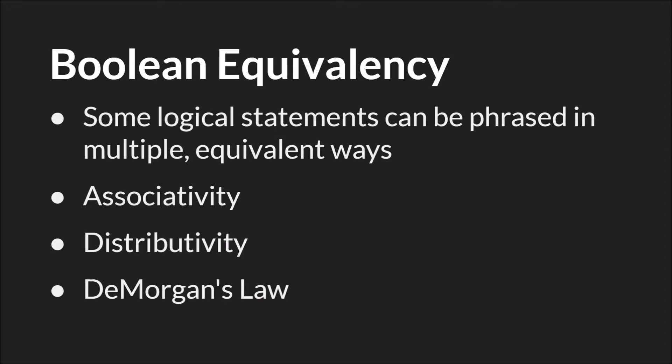We're going to get into some actual code examples in a moment. But before I do that, I want to talk briefly about Boolean equivalency. Boolean equivalency is simply the idea that some logical statements can be expressed in multiple different ways, where each of those ways is the same as the other. I'm going to cover what I think are the three most common: the associative, the distributive, and DeMorgan's Law.